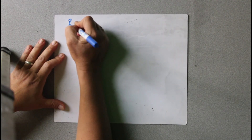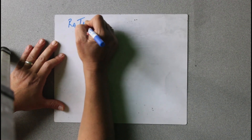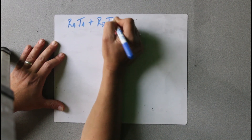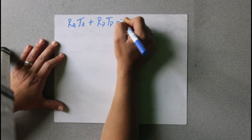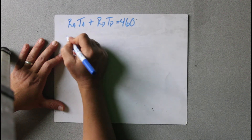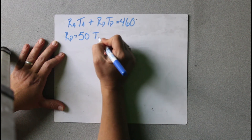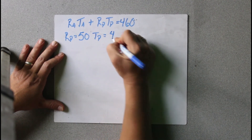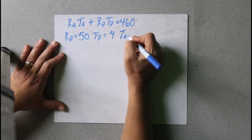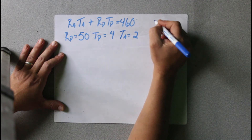These are the practice problems for problem set 79. I'm going to start with A. It says given — given just means this is what we know — RA times TA plus RP times TP equals 460. Then we have RP equals 50, TP equals 4, TA equals 2, and we're supposed to find RA.